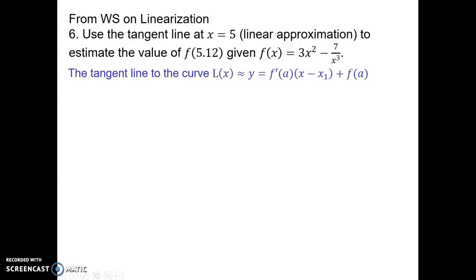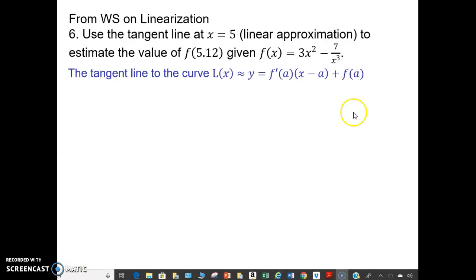Here's our process. The first thing we're going to do is find the equation of the tangent line to the curve, or find the linearization, near x equals 5. The linearization is the equation of the tangent line: y equals the slope times (x minus x₁) plus the value of the curve there. The linearization formula uses a, which is the x-coordinate at x equals 5; f(a), which is the y-coordinate at x equals 5; and f′(a), the slope of the curve at x equals a.